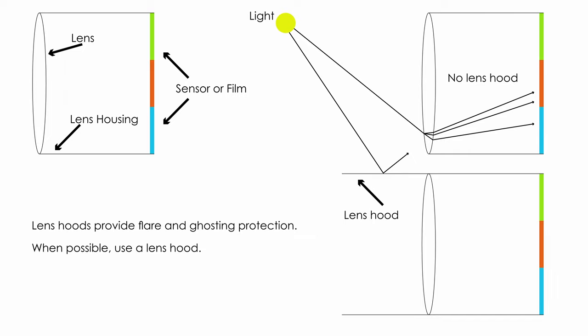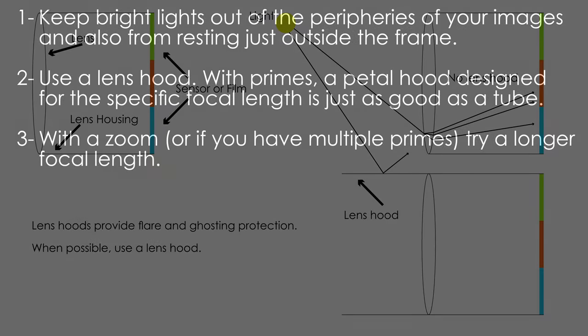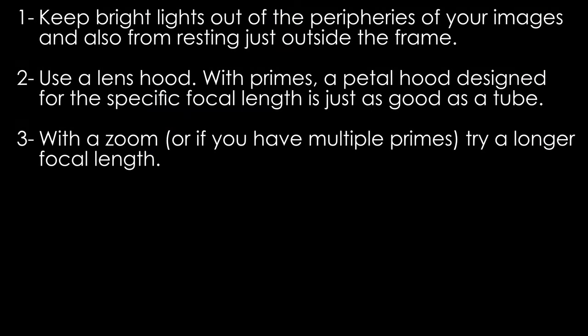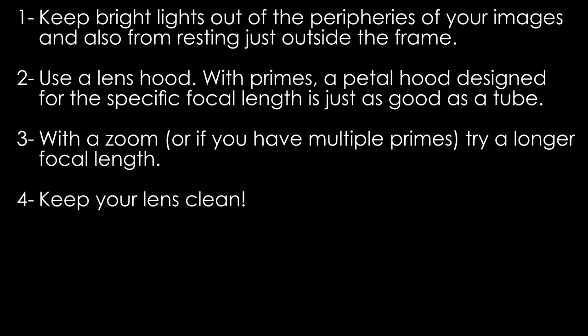Lenses with deep-set front elements — and most of these are vintage lenses — have lens housings that work kind of like built-in hoods. With a zoom, or if you have multiple primes, try a longer focal length lens, as a tighter focal length can eliminate the problematic light source and the way it interacts with your lens. Also keep your lens clean: dust, dirt, smears, and grease can exacerbate flare and ghosting.